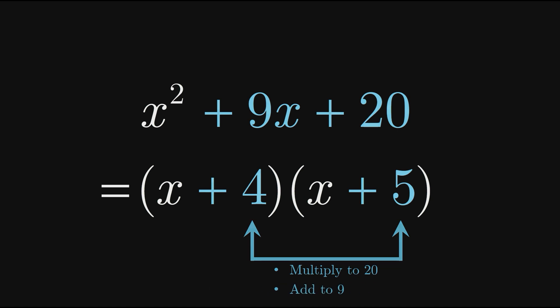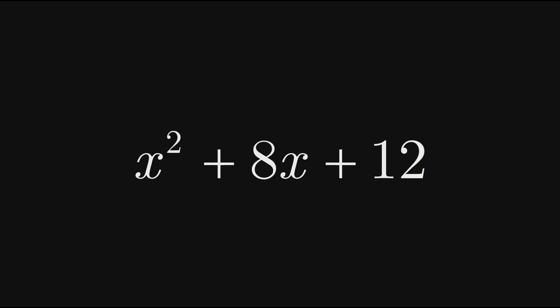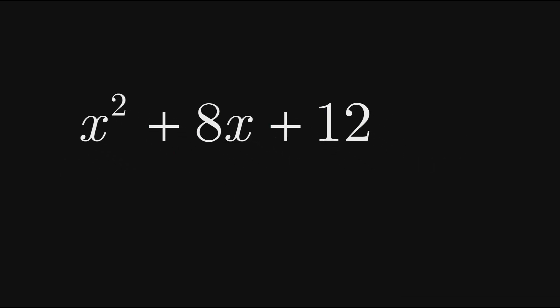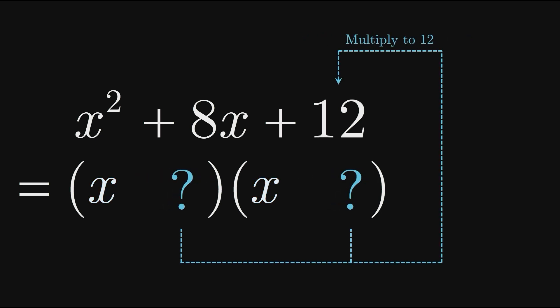Let's apply this thinking to the factorization of a few other trinomials, starting with x squared plus 8x plus 12. We know that the factored result will have two binomial factors, each containing an x term. We also know that the constant terms in these factors must multiply to 12 and add to 8.